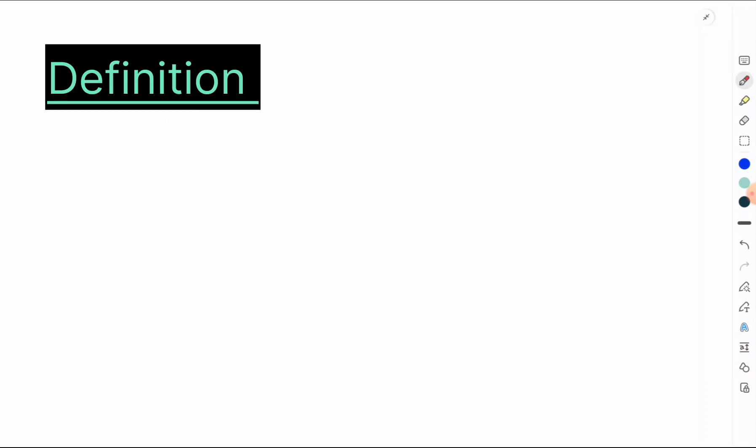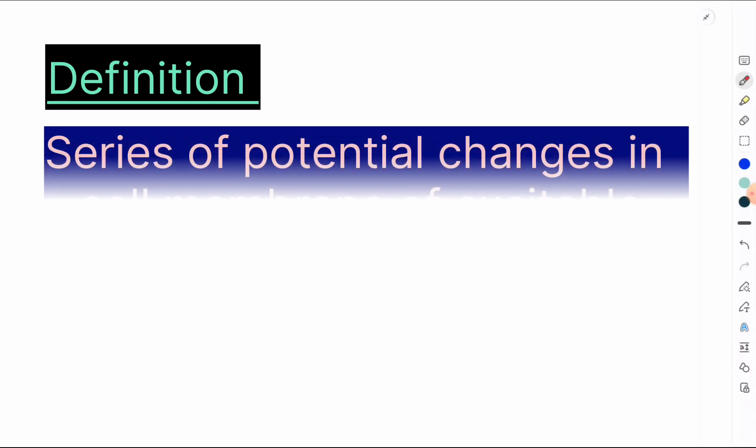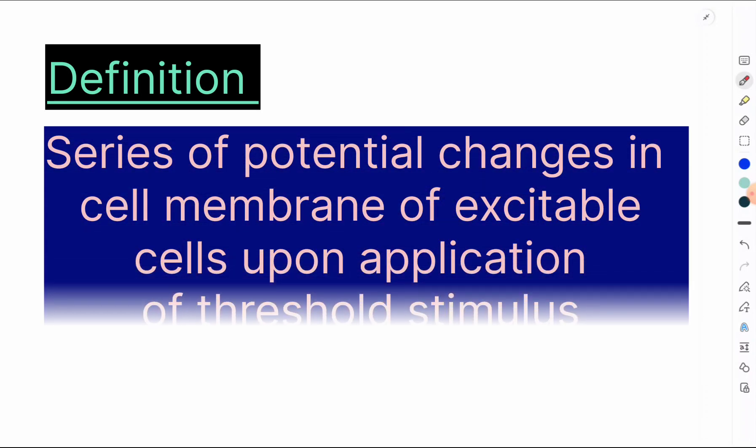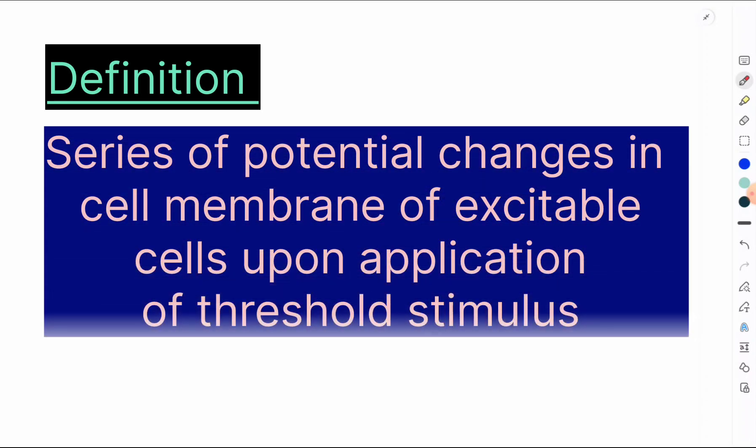What's the definition? Action potential is a series of potential changes which occurs in a cell membrane of excitable cells upon application of the threshold stimulus.